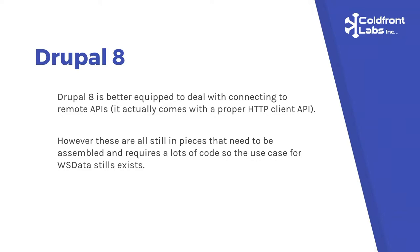Drupal 8 comes with Guzzle, which is a really great HTTP client built in. It's set up as a Drupal 8 service, so you use dependency injection and get the factory-standard PHP HTTP client for whatever you're building. But the big problem in D8 is that all these pieces still have to be assembled. There's a lot required if you're going to write generalized code to call web services, so there's still a use case for WSData. One thing I found while porting: Guzzle's default behavior is to throw an exception on any HTTP error result code, so nothing is as bad as getting an exception that ends your whole Drupal site because Guzzle got a 404.